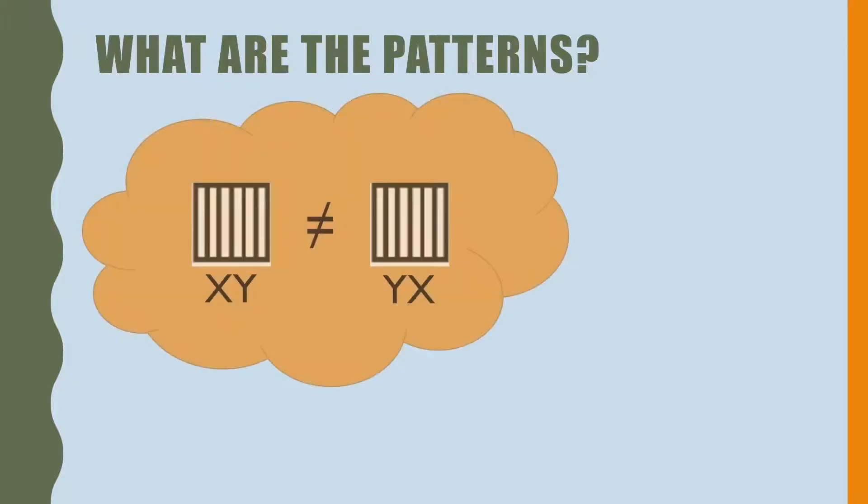There are two patterns we have to recognize. The first pattern is the order of the letters. The first letter would stand for something, and the second letter would stand for something. They cannot be switched over.